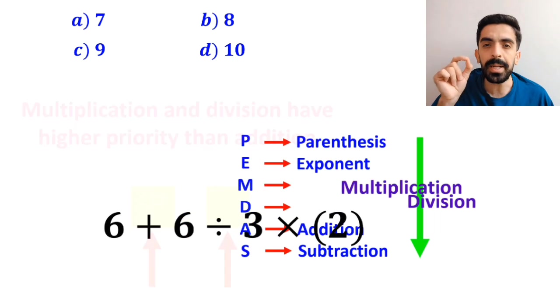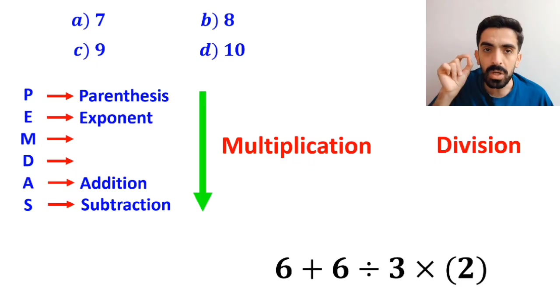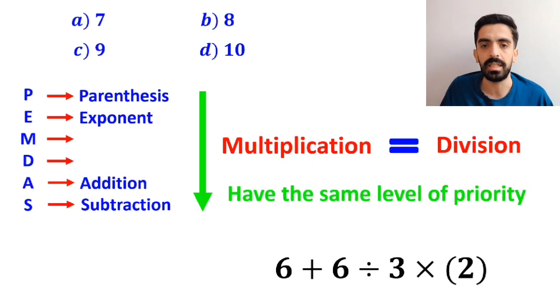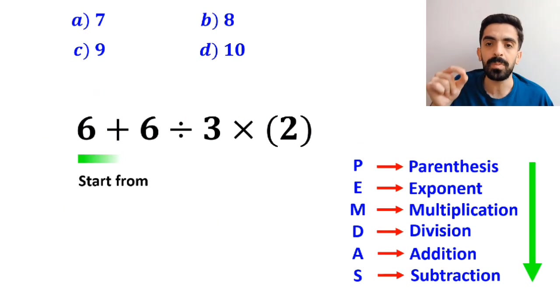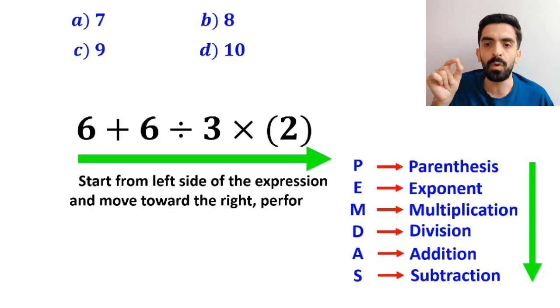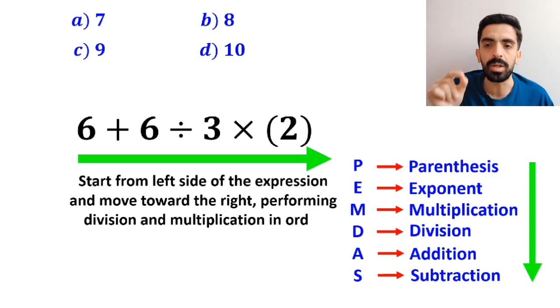However, it's very important to note that in the PEMDAS rule, multiplication and division have the same level of priority. In this situation, the best thing to do is to start from the left side of the expression and move toward the right, performing division and multiplication in order.